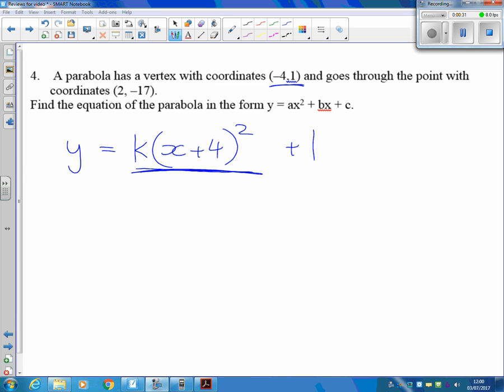I'm going to find out what it is by dropping in the 2 here and dropping in the minus 17. So minus 17 equals, putting the 2 in there gives me 6, 6 squared is 36k plus 1. Take away the 1 and divide by 36 tells me that my k value is going to be minus a half.